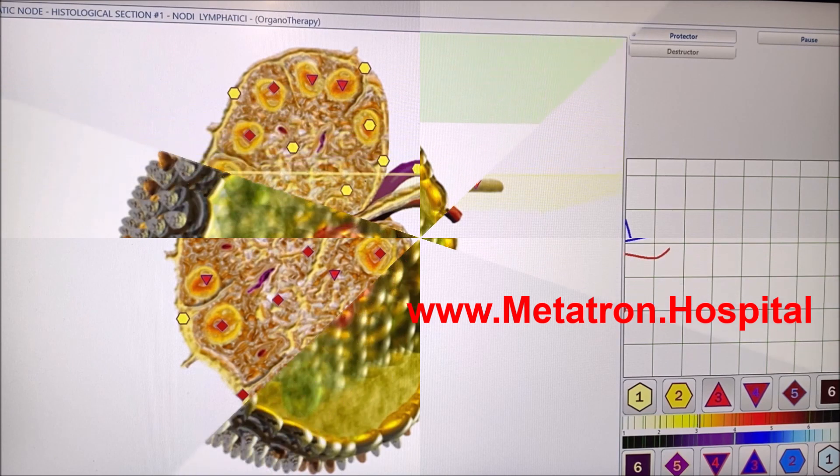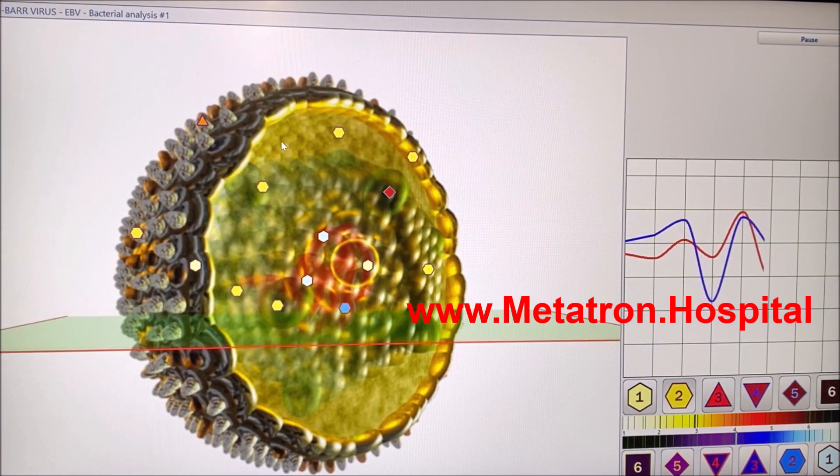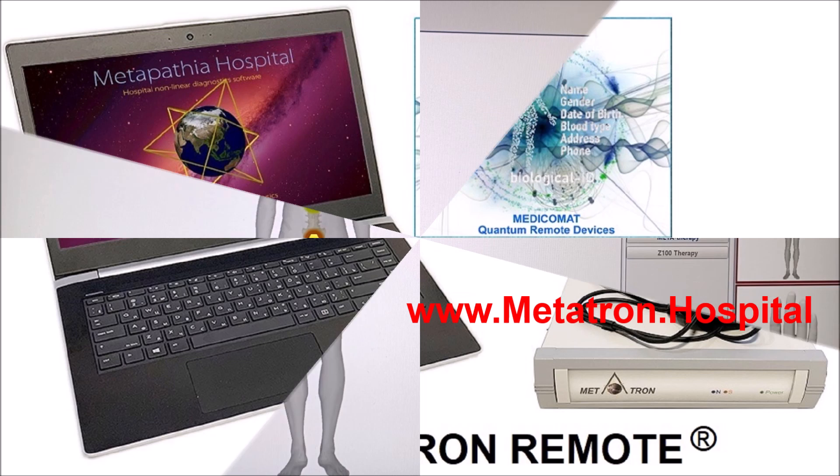Required information that determines your quantum ID are: name, gender, date of birth, blood type, address, and phone.